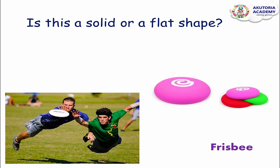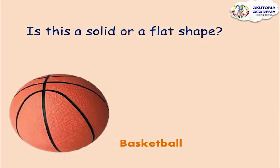Now let's go into the main lesson. Is this a solid or a flat shape? This is a frisbee — a circular disc that we use to play. You spin it in the air and someone catches it. As you can see, the men in the picture want to catch the frisbee. The frisbee has the shape of a circle. Is it a solid shape or a flat shape? It's a flat shape! Let's say: flat shape.